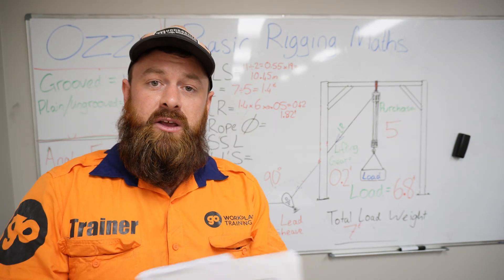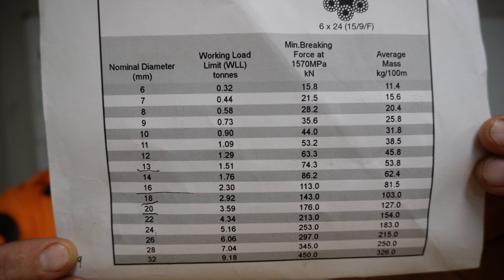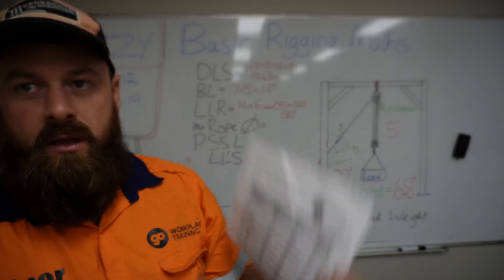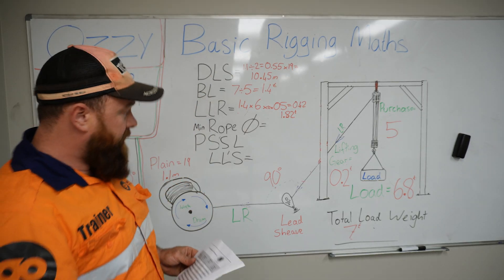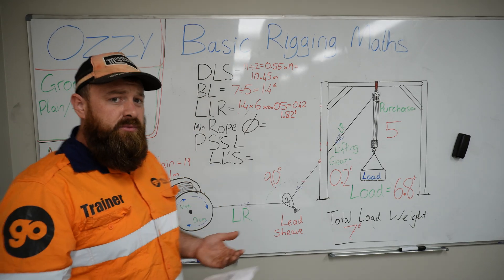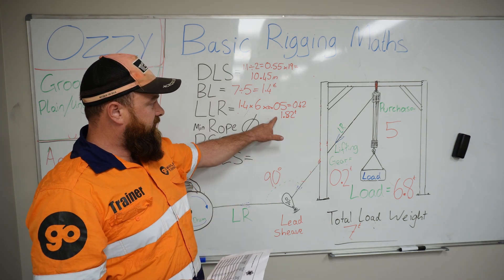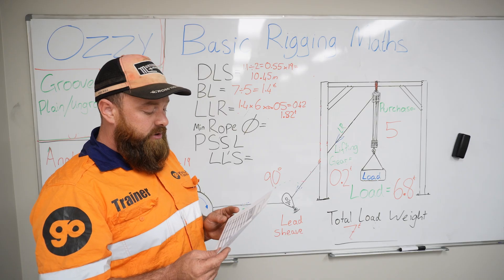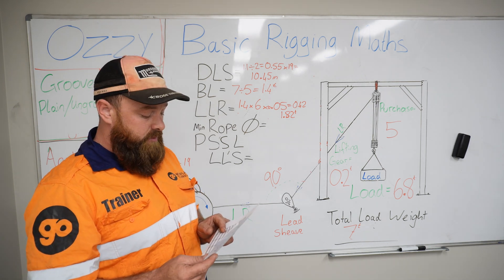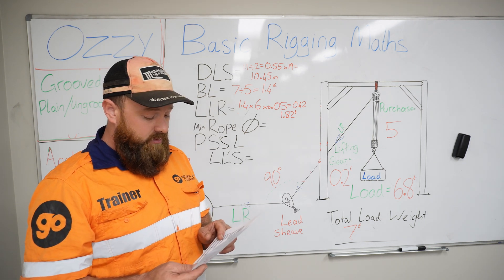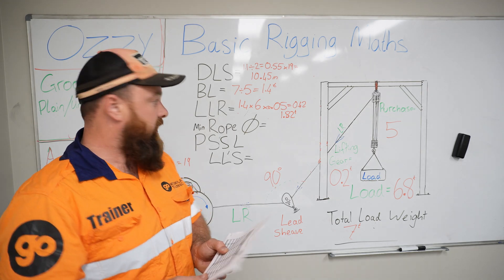Pause this video on this screen — this is our load chart. We need to find the minimum rope diameter that can support 1.82 tonnes. We are going to go with a 16mm rope diameter as a minimum, which can support up to 2.3 tonnes.